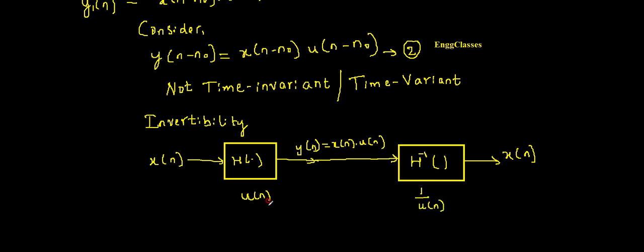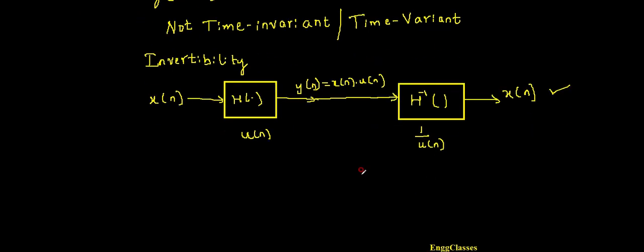The first system multiplies with u(n). Add an inverse system which divides with u(n) so that I can get back the original input. Therefore, the given system, I would say it is invertible.